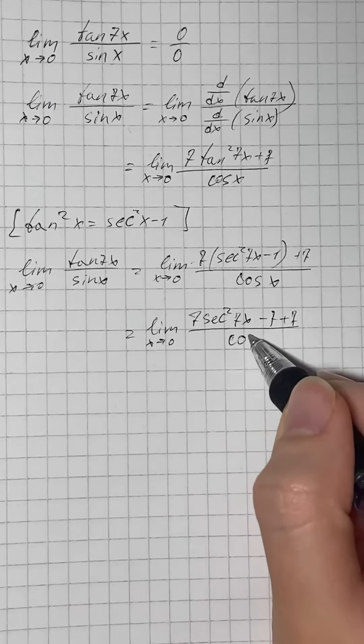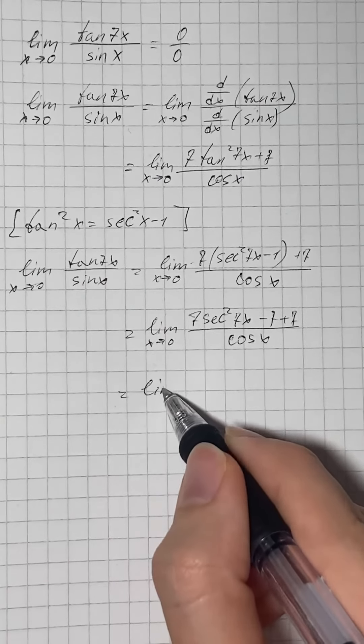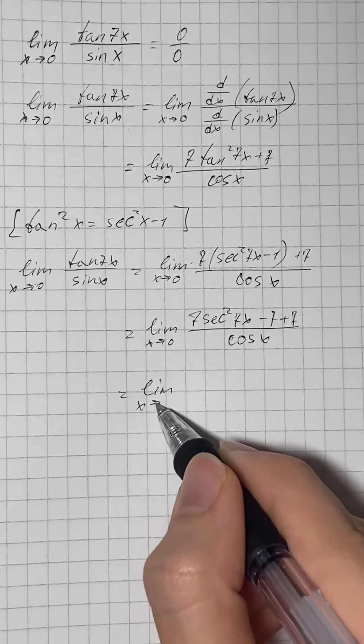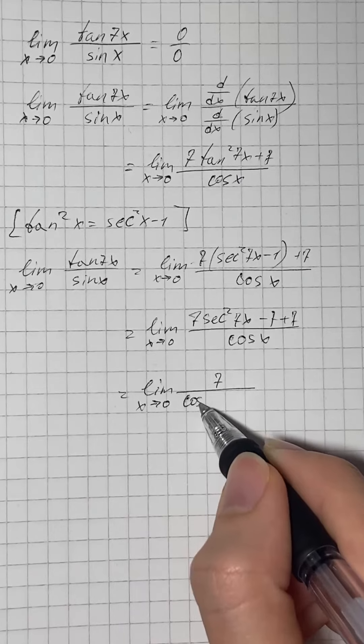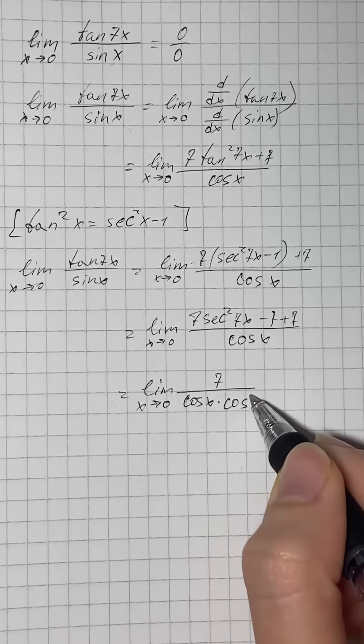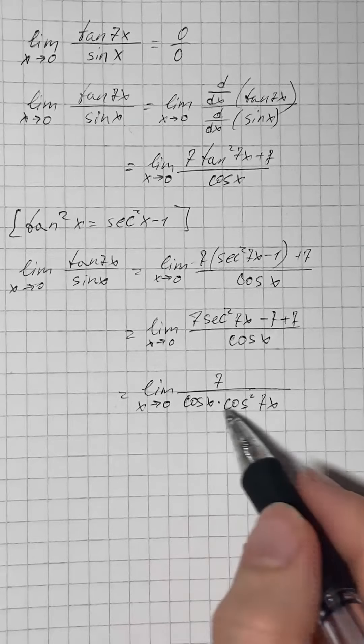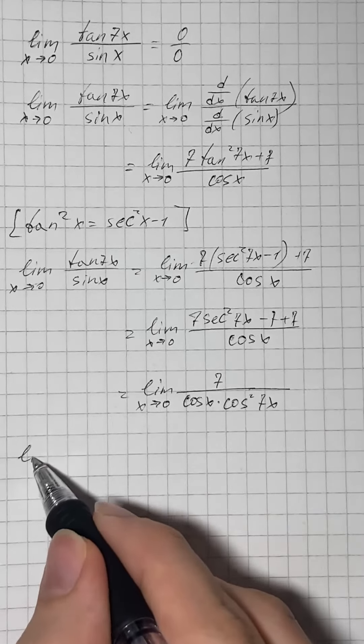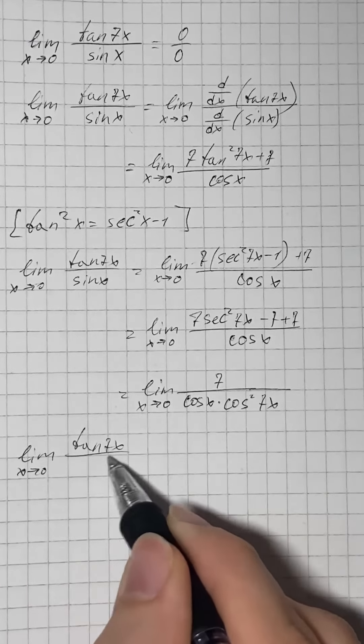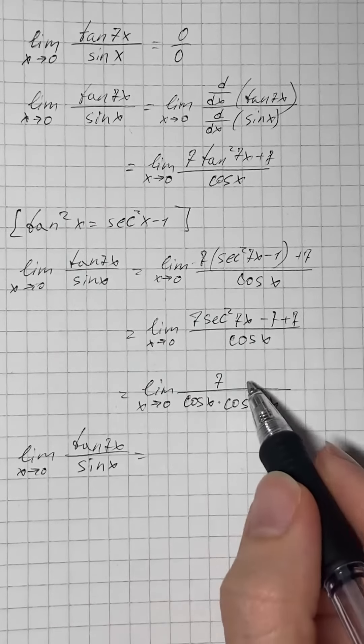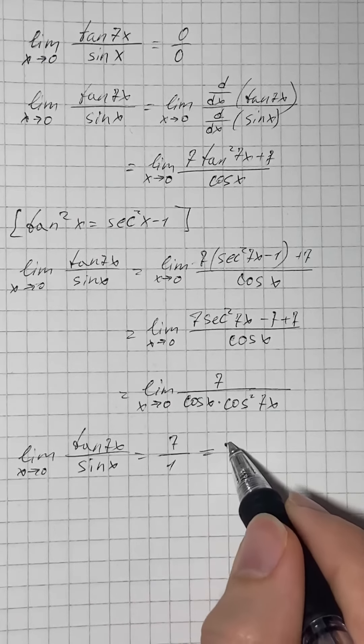Therefore, we get limit as x approaches 0 of 7 over cos of x times cos squared of 7x. Now we put x equals 0 and we get limit as x approaches 0 of tangent of 7x over sin of x equals 7 over 1, or just 7.